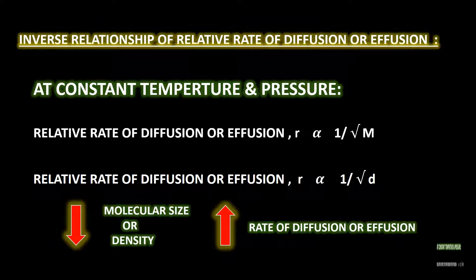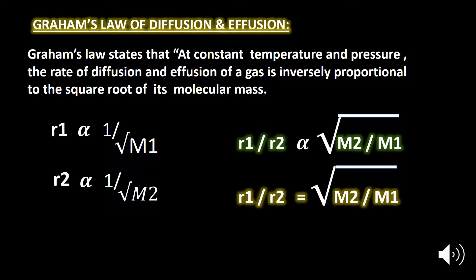Here, capital M denotes the molecular mass and small d denotes the densities. When two variables are inversely proportional to one another, it means that with the increase of one variable the other goes down. As you can see here, the molecular mass or the density is decreasing — shown by a red arrow — which results in the increase of the rate of diffusion or effusion of gases.